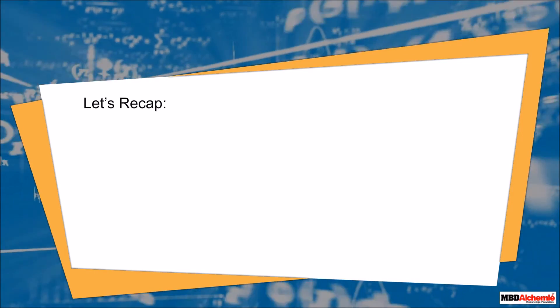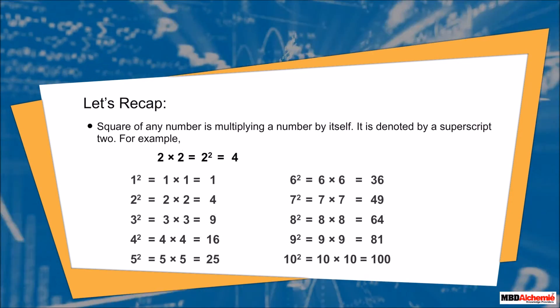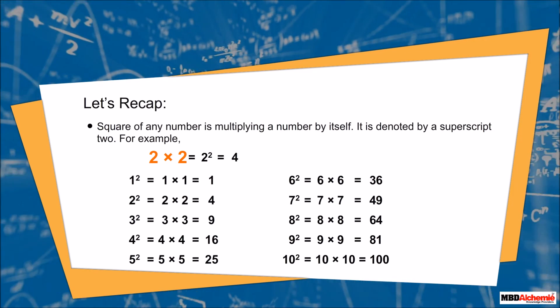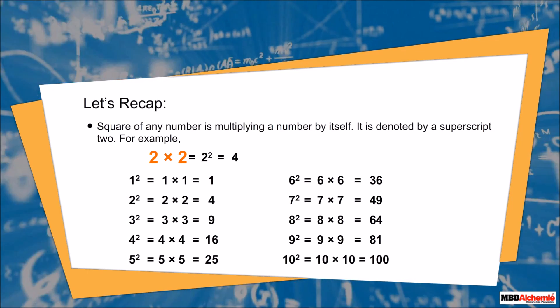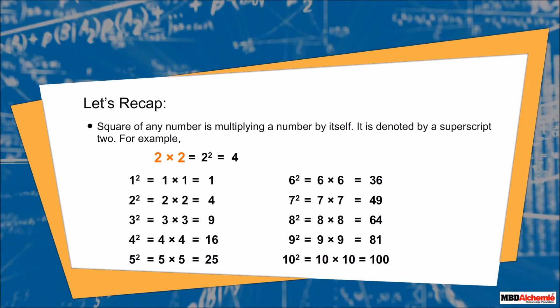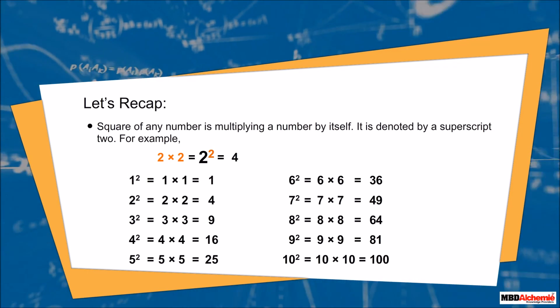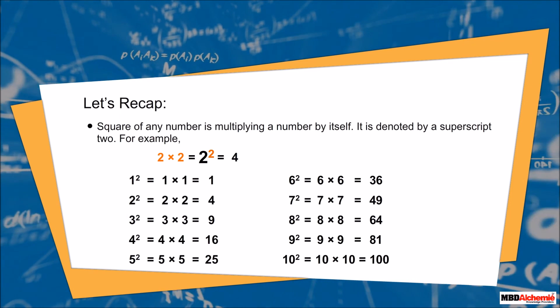Let's recap: the square of any number is multiplying a number by itself. It is denoted by a superscript 2.